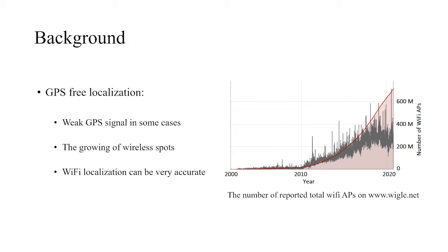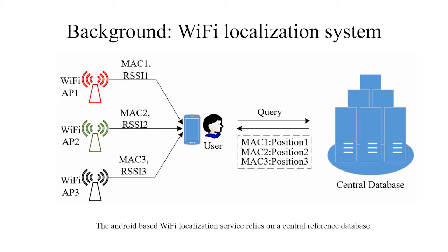The structure of the WiFi localization system is shown here. First, the smartphone will collect the WiFi signals and send these signals as a query to the central database. The central database will return the positioning information. After getting this information, the smartphone will calculate the final positioning result and show that to the user.